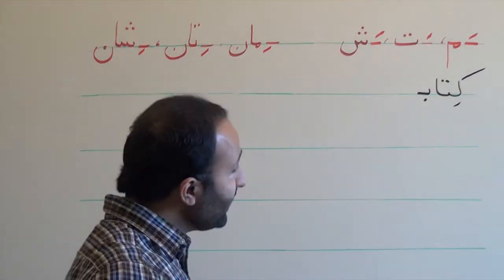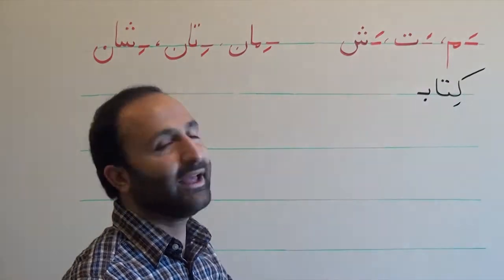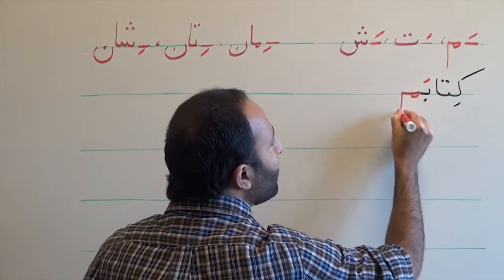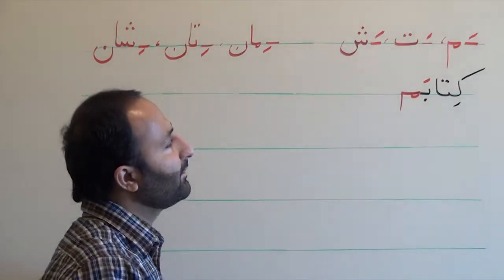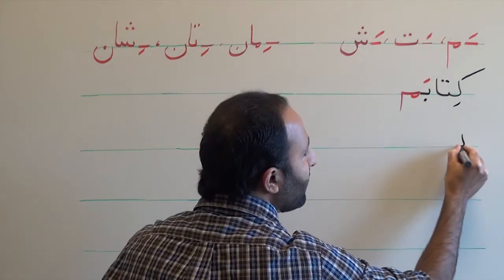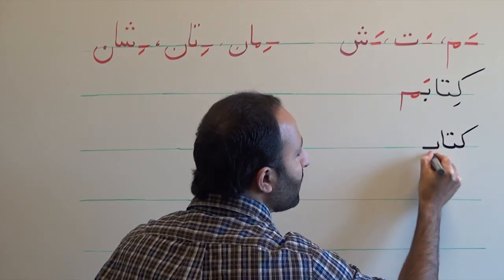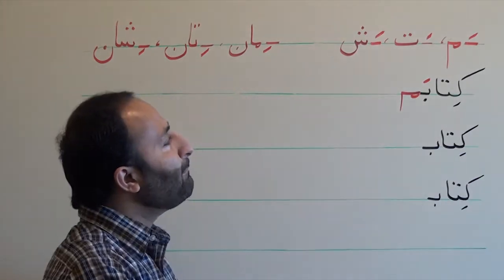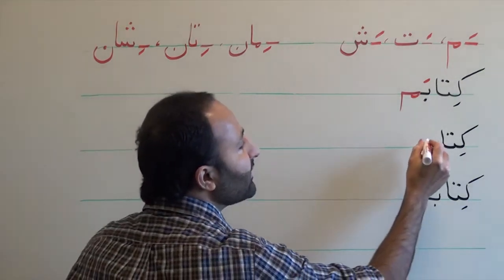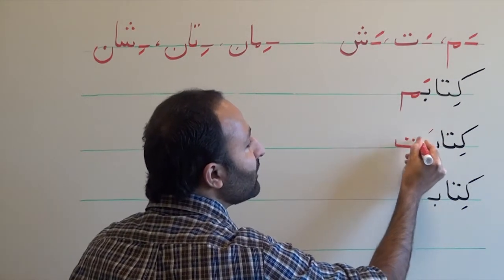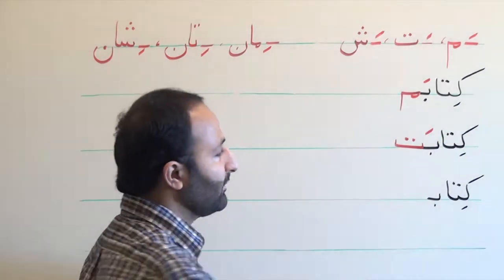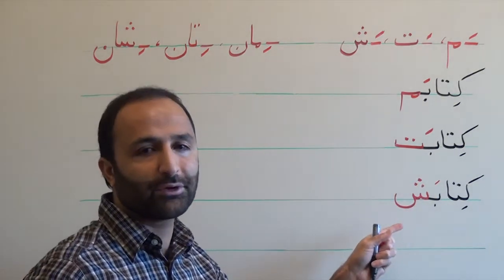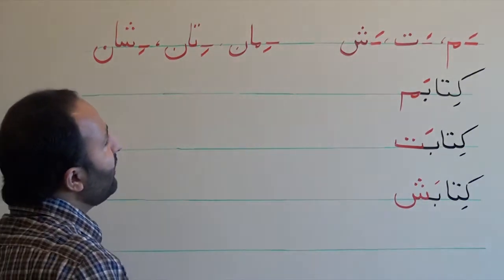We can attach one of these endings to the word 'ketab' (book). So 'ketab-am' means 'my book.' The same for others: 'ketab-am' means my book; 'ketab-at' means your book, singular; and 'ketab-ash' means his or her book.